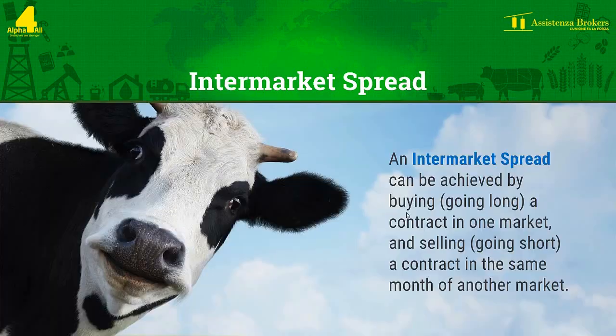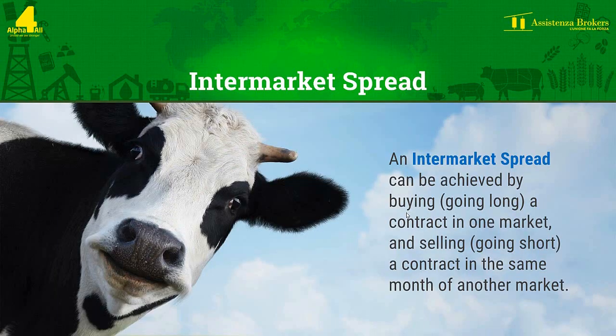The next type of spread is an inter-market one. This can be created by buying a contract in a market — going long — and selling a contract with expiry in the same month — going short — but in another market. An example of this is: I could buy a future on beef cattle and sell one on lean hogs, both with the maturity in the same month, maybe because I think that the first element may increase against the second. I will profit from the spread if the price of the beef cattle increases more than that of the lean hogs.